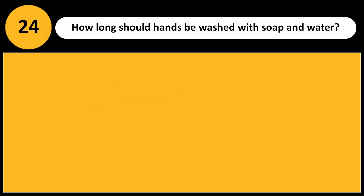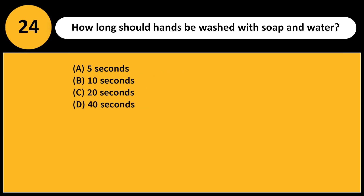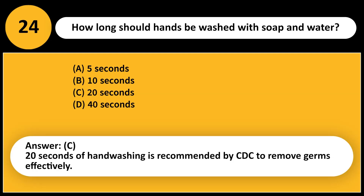How long should hands be washed with soap and water? A. 5 seconds. B. 10 seconds. C. 20 seconds. D. 40 seconds. Answer: C. 20 seconds of hand washing is recommended by the CDC to remove germs effectively.